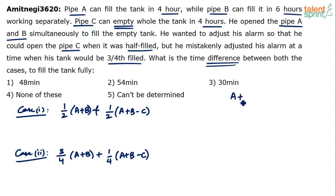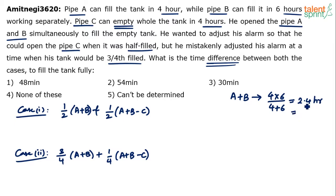When A and B work together, the time required is (A×B)/(A+B) = (4×6)/(4+6) = 24/10 = 2.4 hours. That is 144 minutes, or 2 hours and 24 minutes. So A and B together will be able to fill the tank in 144 minutes.